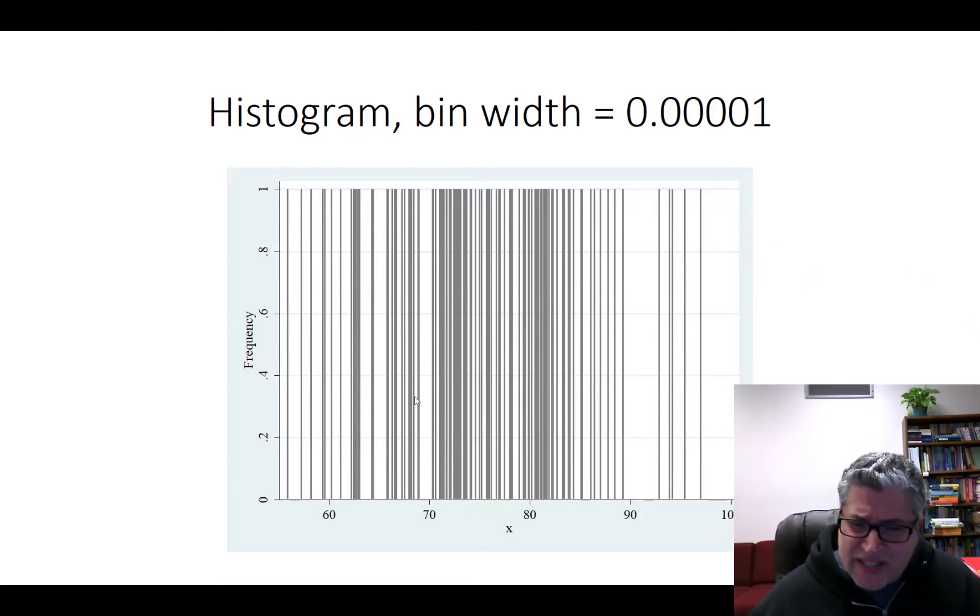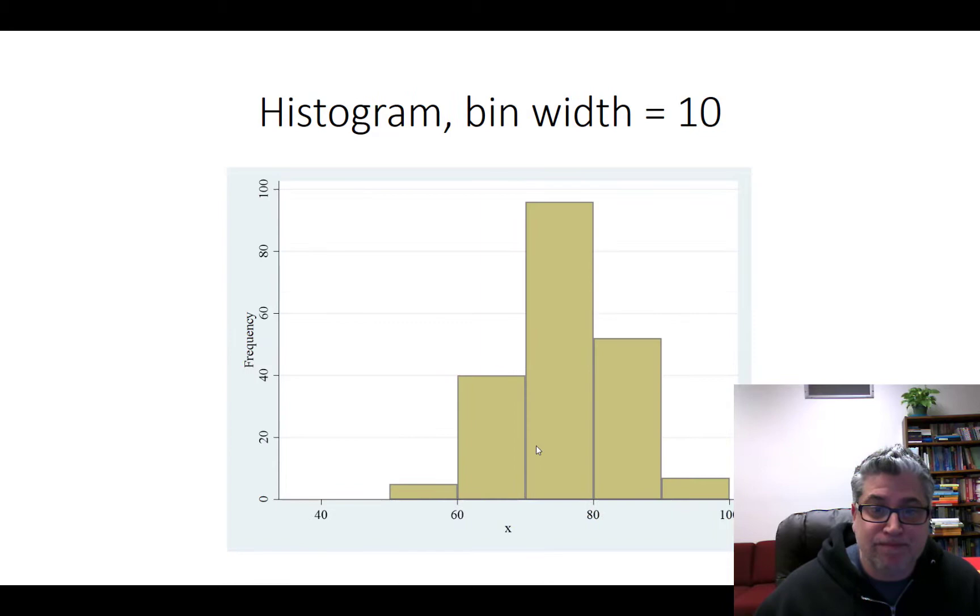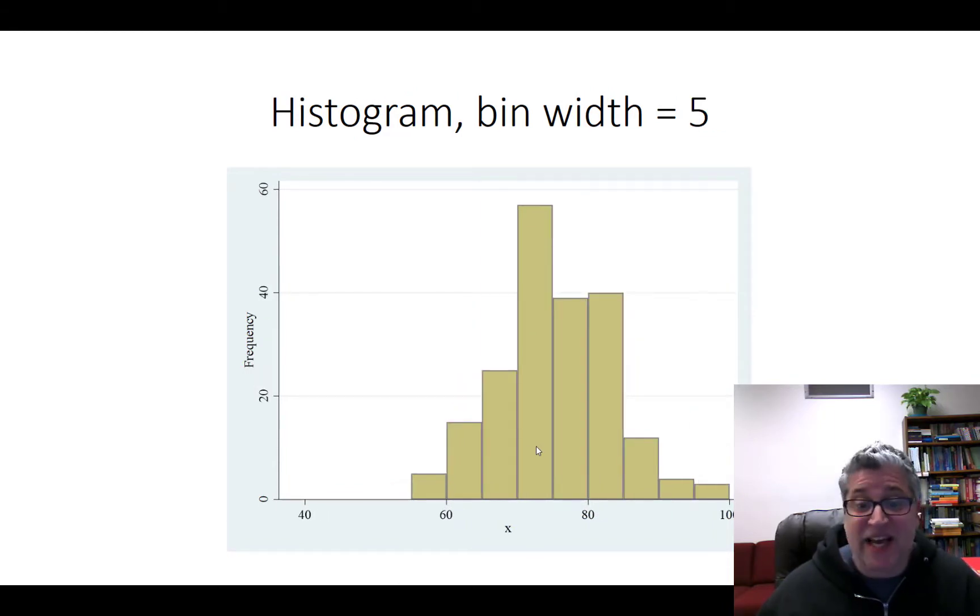They do kind of seem to cluster around 70, 80, but it's really hard to tell. I don't have a real good sense of what the average is. I don't have any sense of what frequently occurring values are like. It looks like maybe 72, maybe 82, but I can't be sure, whereas this kind of tells me a whole lot more.